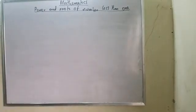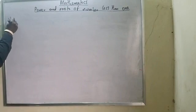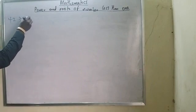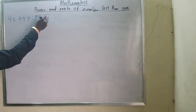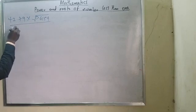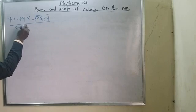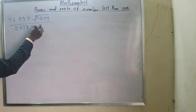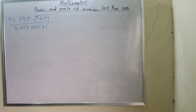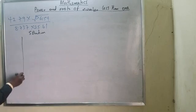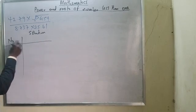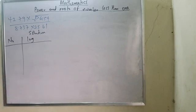Now let me show another example that will really explain this. I have this problem: 2.78 multiplied by the square root of 0.6154, all divided by 8.737 multiplied by 25.16. I want to evaluate this expression. Solution: I will set up my Number and Log columns.